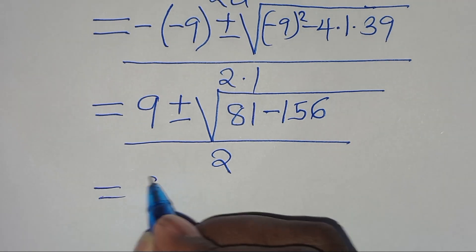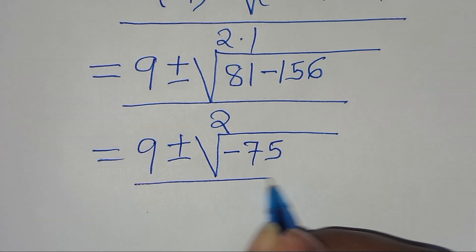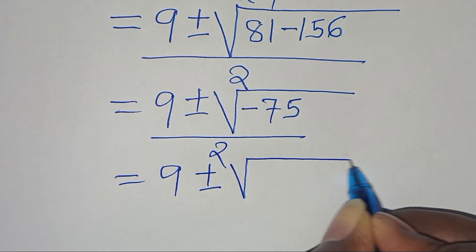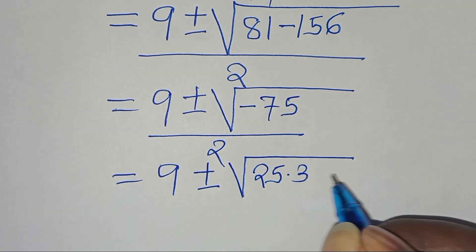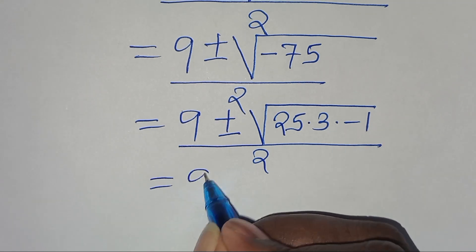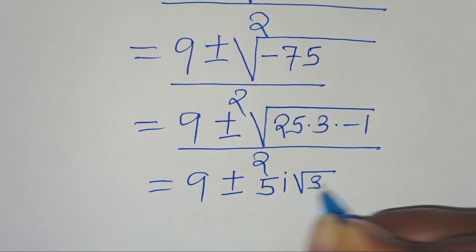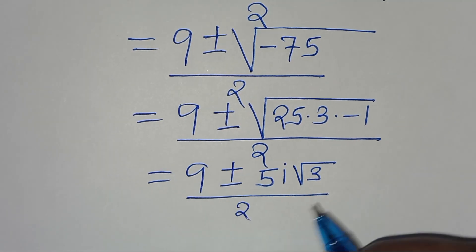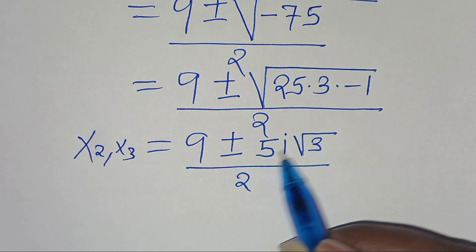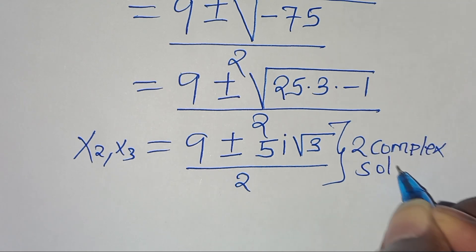So we have 9 plus or minus the square root of minus 75, divided by 2. We express the square root of minus 75 as the square root of 25 times 3 times minus 1, which equals 5i√3. Therefore x₂ and x₃ equal (9 plus or minus 5i√3) divided by 2. These are two complex solutions under Case 1.